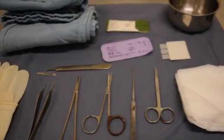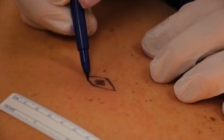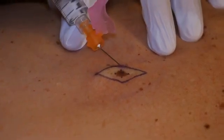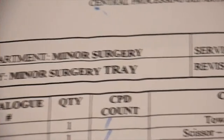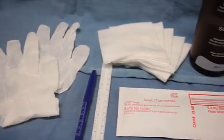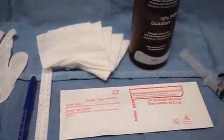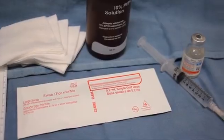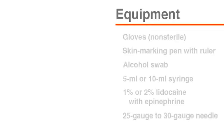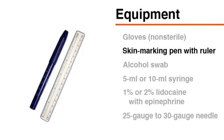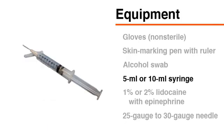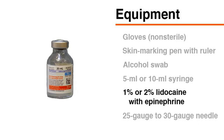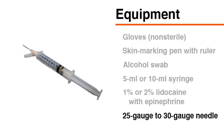Sterile technique should be observed during excisional biopsy; however, it is common to mark the skin and administer a local anesthetic before preparing the sterile tray. To prepare, assemble the following items on a non-sterile tray: non-sterile gloves, a skin marking pen with ruler, an alcohol swab, a 5 or 10 milliliter syringe, and 1 or 2% lidocaine with epinephrine, typically in a concentration of 1 to 100,000, and a 25-gauge to 30-gauge needle.